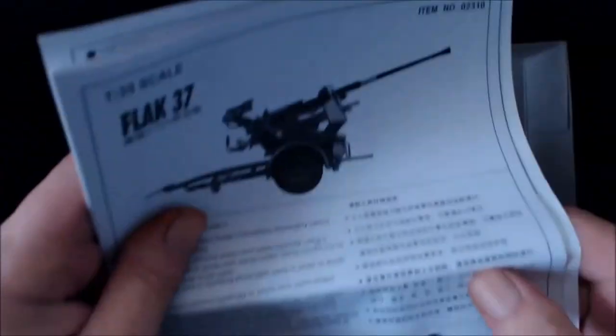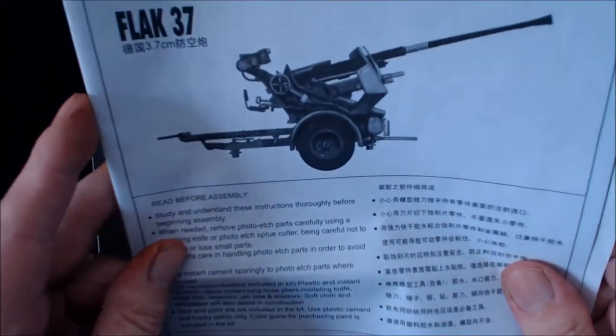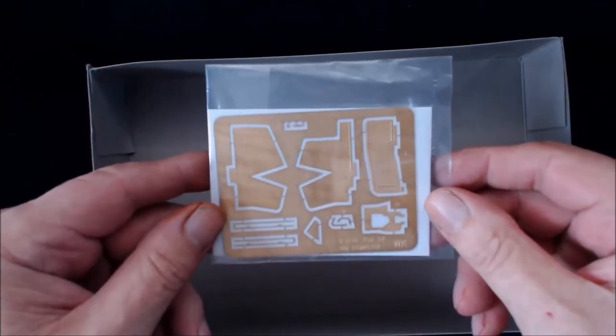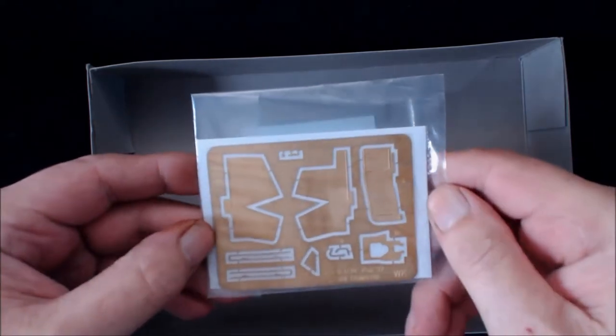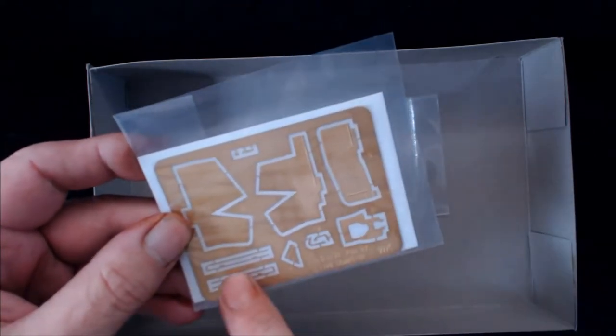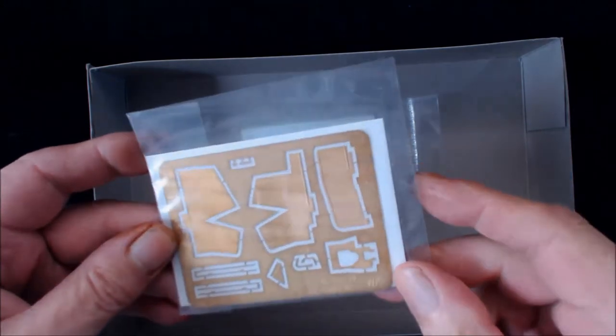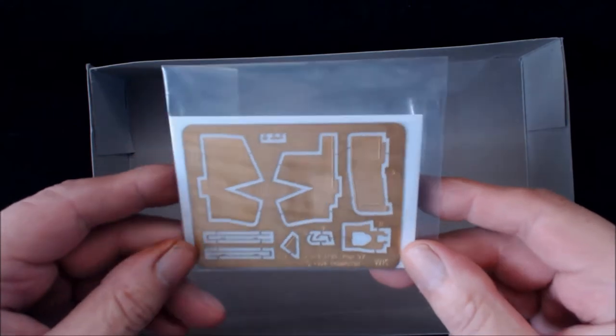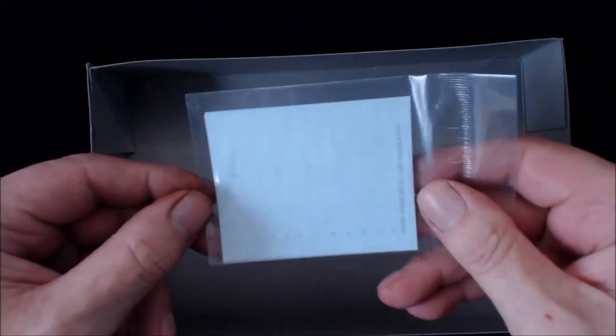And in the bottom here we have the workshop manual which we'll have a look at in a moment. We have a painting and marking guide which we shall have a look at in a moment. We also have 2 frets of PE. I think this is exactly the same as what we had in the other one. It's actually the gun shield. And also right in the bottom of the box we have a pack of decals. Everything is out of the box. What we'll do now, we'll get on and we'll have a look at the workshop manual.